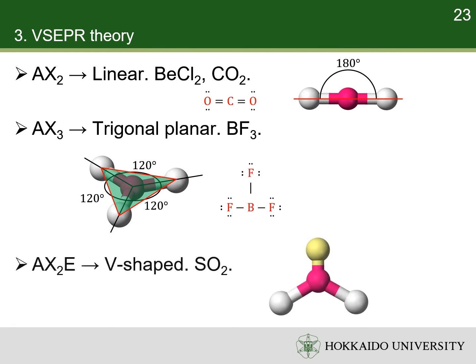An AX2E molecule has two ligands and one lone pair, that is, three electron pairs. The biggest angles between them are achieved when they are in a plane, so the electron pairs have a similar arrangement as in the AX3 molecule. However, when describing the shape of the molecule, only the central atom and the ligands are mentioned, so an AX2E molecule has a V shape. A typical example of an AX2E molecule is sulfur dioxide.